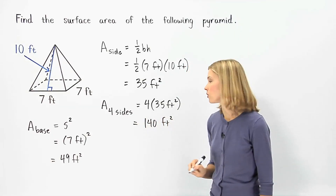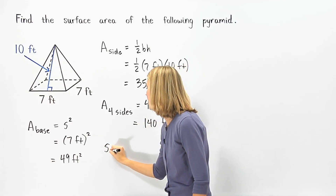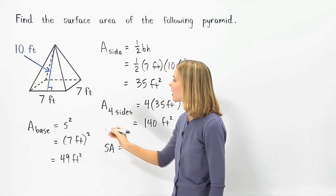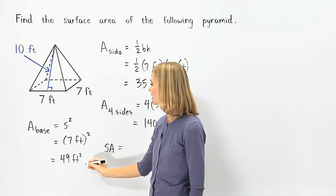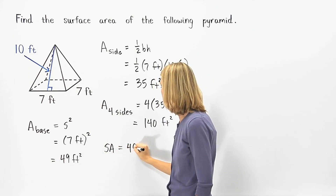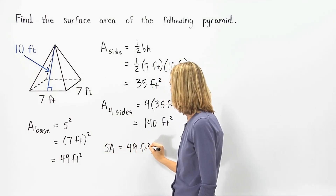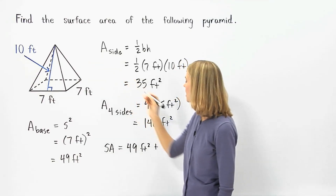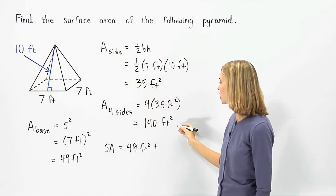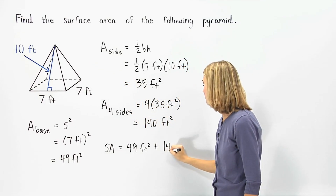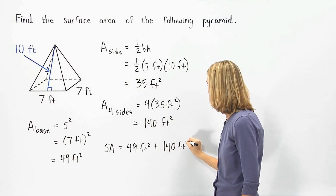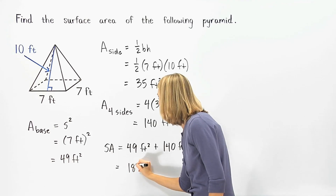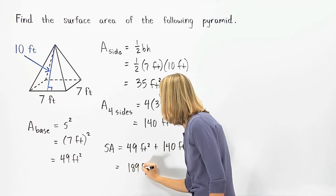Finally, to find the total surface area of the given pyramid, we add the area of the base, 49 square feet, plus the area of all 4 sides of the pyramid, 140 square feet, to get 189 square feet.